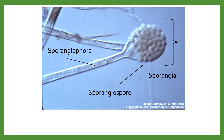Here we have an example of a mold group known as the zygomycetes. We've got the sporangium, which is the sac that holds the spores. Those spores are called sporangiospores, and the structure that holds the sporangia is called the sporangiophore.